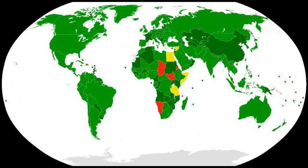An additional five states have signed the BWC but have yet to ratify the treaty. The scope of the BWC's prohibition is defined in Article 1, the so-called General Purpose Criterion. This includes all microbial and other biological agents or toxins and their means of delivery, with exceptions for medical and defensive purposes in small quantities. Subsequent review conferences have reaffirmed that the General Purpose Criterion encompasses all future scientific and technological developments relevant to the Convention.